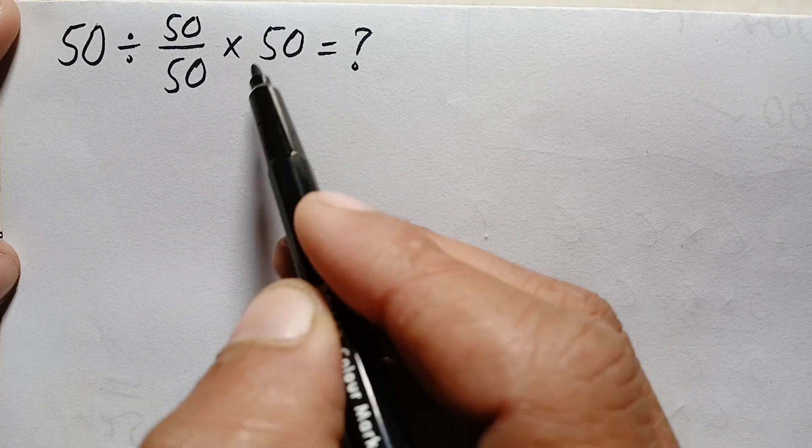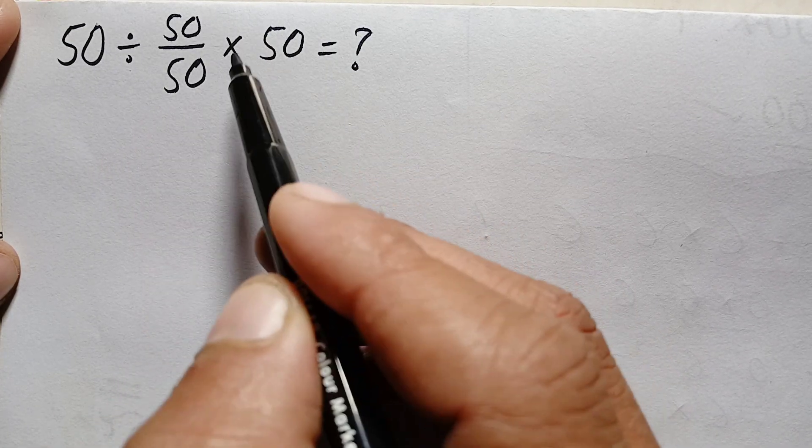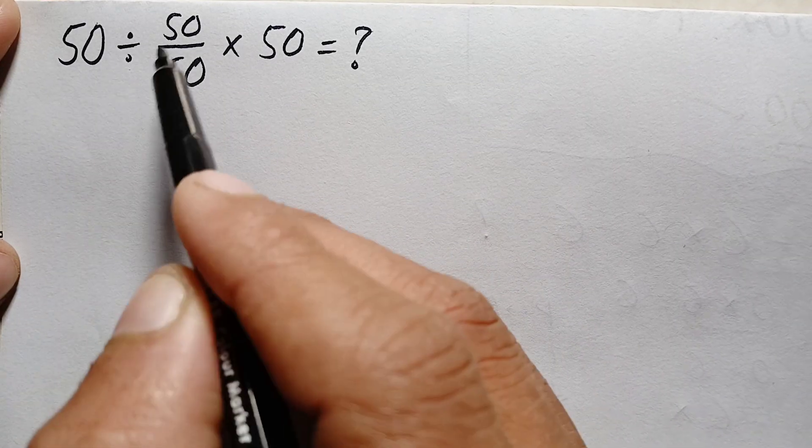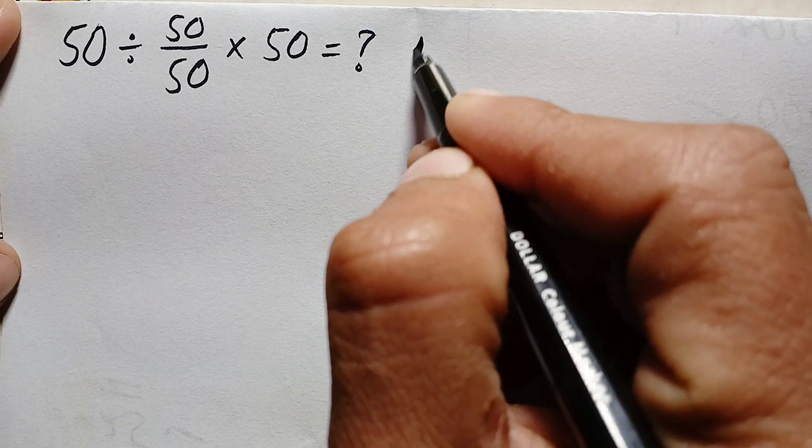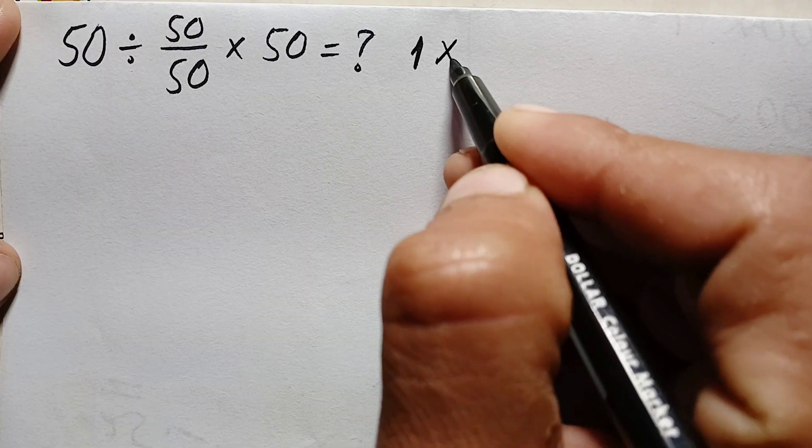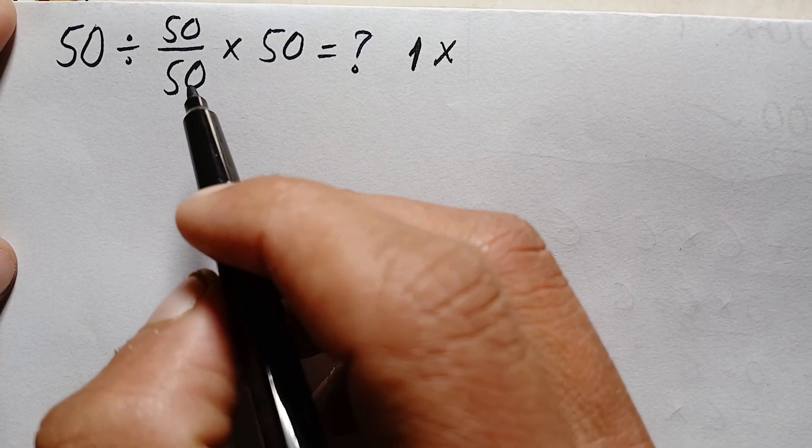Apart here we can cancel 50 with 50, so this part will become 50. And dividing 50 by 50 gives us 1, and here 1 is our answer. But this answer is wrong. Now look into the problem.